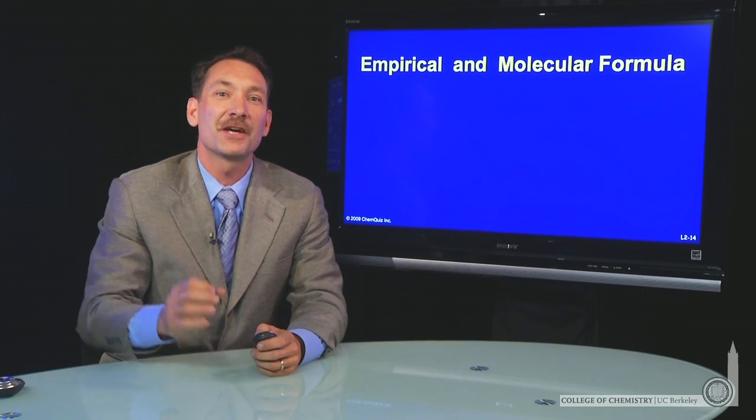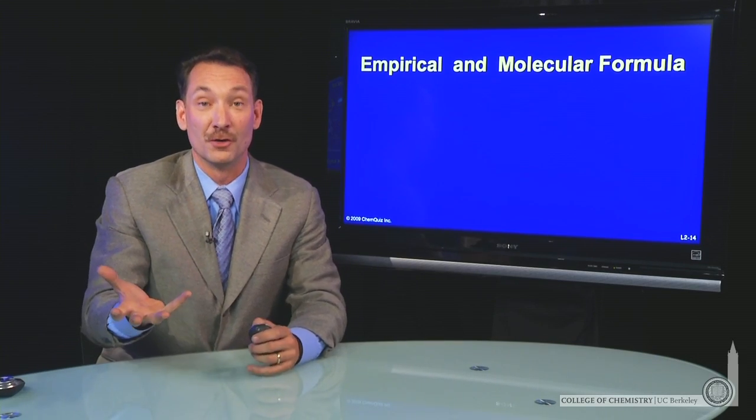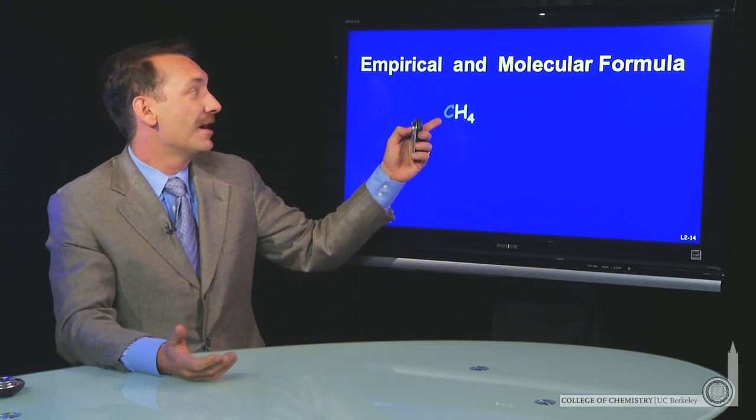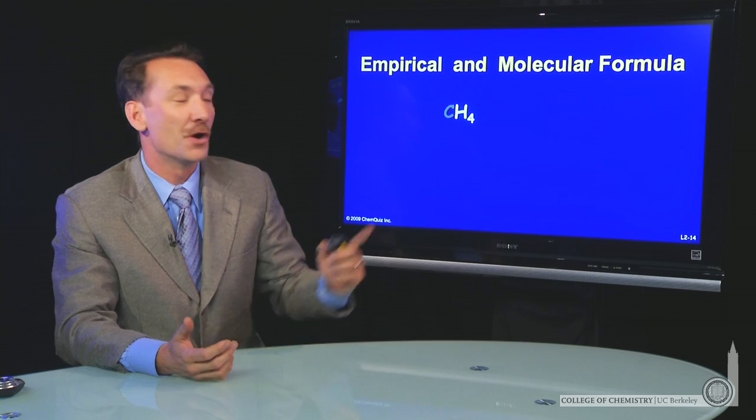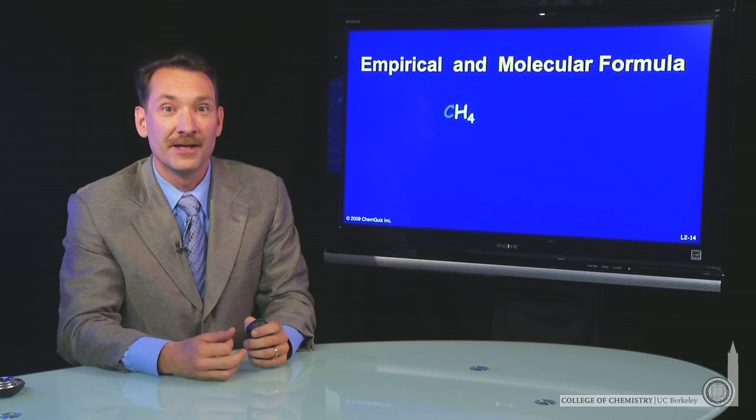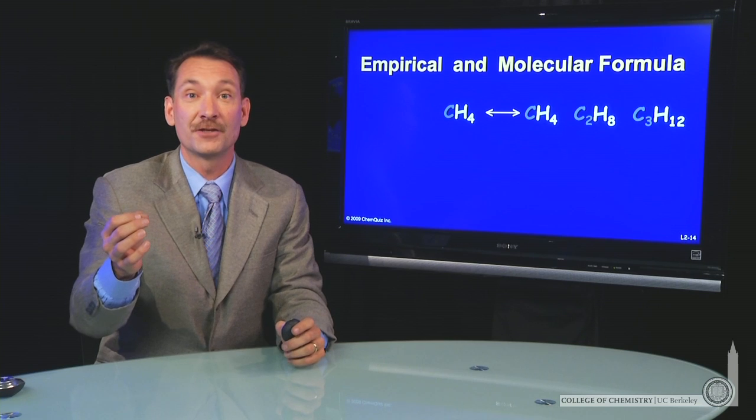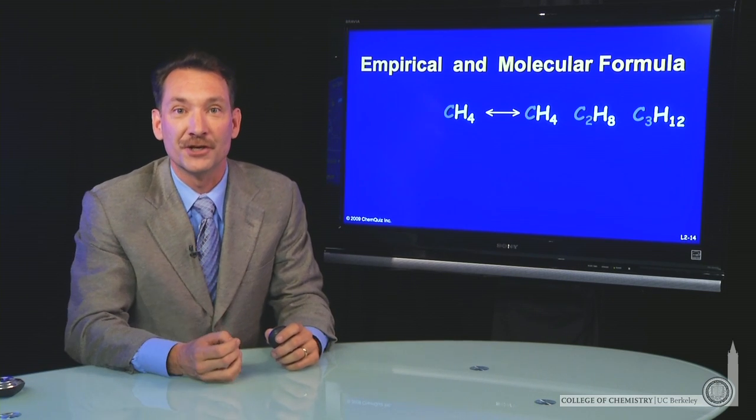When you run a mass spectrum, all you get is the ratio of the masses involved. So if you had a carbon to hydrogen ratio of 1 to 4, that could actually be a number of things. That could be CH4, C2H8, or C3H12. Each of those molecules has a 1 to 4 ratio.